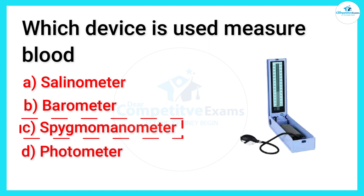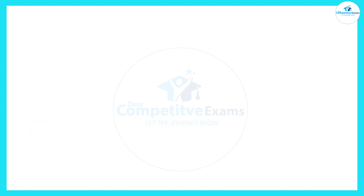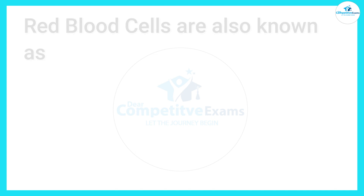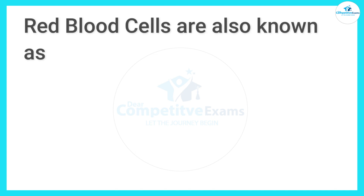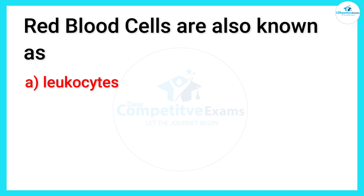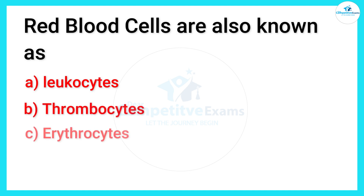Red blood cells are also known as — so what is the other name of red blood cells? The answers are: leukocytes, thrombocytes, erythrocytes, or neutrophils.